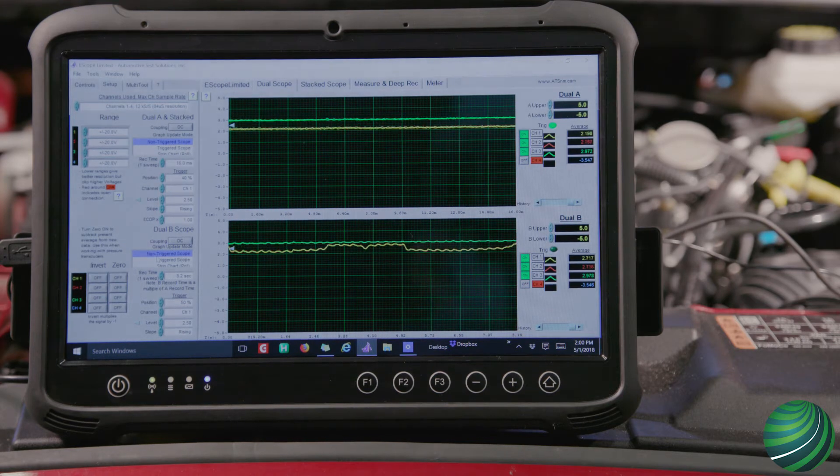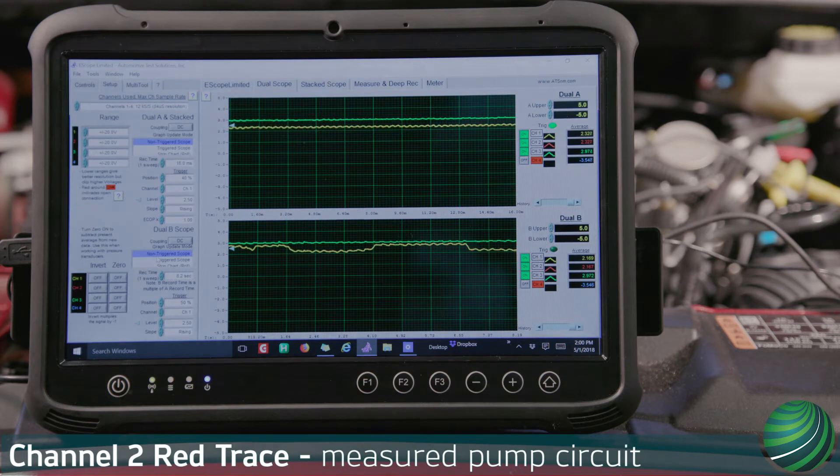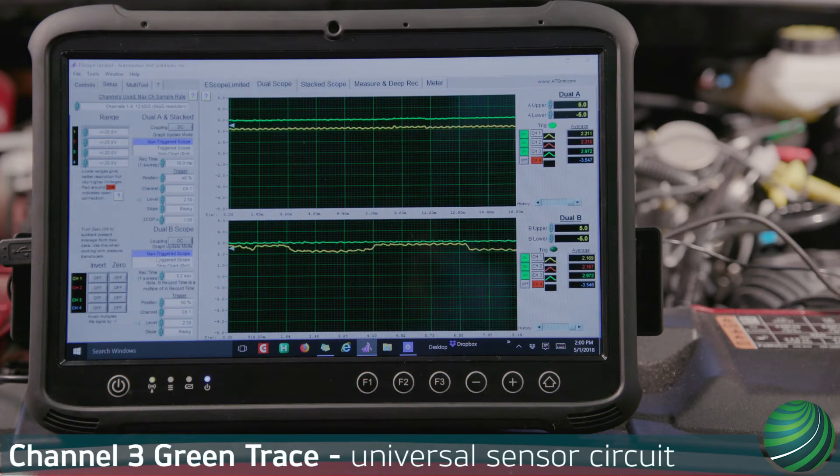The scope channels are connected in the following order. Channel 1, yellow trace on the pump cell. Channel 2, red trace on measured pump cell. And channel 3, green trace on the universal sensor.